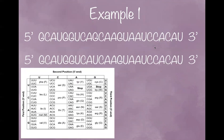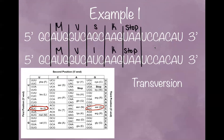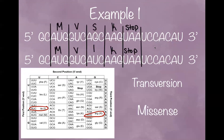The top strand is the wild type and the bottom strand is mutated. Pause the video and read through the strands to find the difference. Hopefully you found the difference here. Since this is going from purine to pyrimidine, this is a transversion. Now let's take a look at the coding difference. This base change changes the amino acid, so this is a missense point mutation.